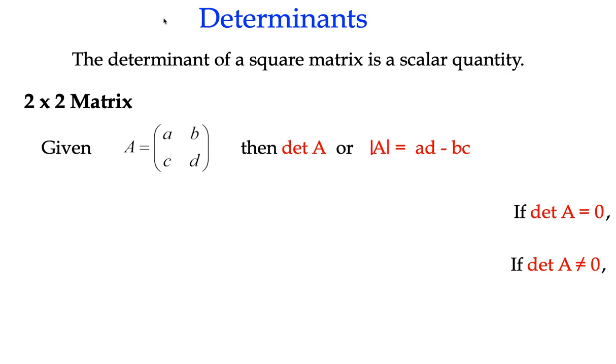So the first thing that's important to know is that the determinant of a square matrix is a scalar quantity. In other words, it's a number, it's not a matrix.